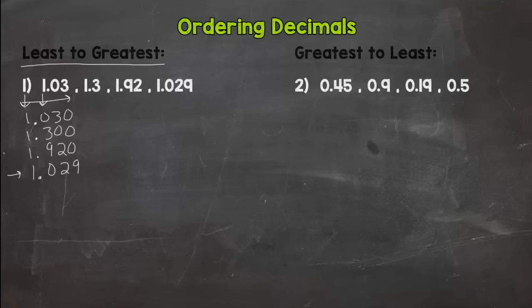So we're going to go to the tenths place, and we have a zero, a three, a nine, and a zero. So the lowest numbers in value we have in the tenths place are those zeros, so it's either going to be the top or the bottom one that's the least in value. So what we're going to do is we're going to hop to the hundredths place for those two to see if we can find a difference. We have a three and we have a two.